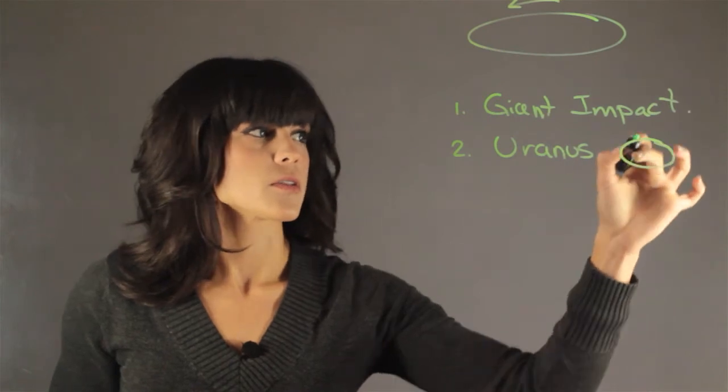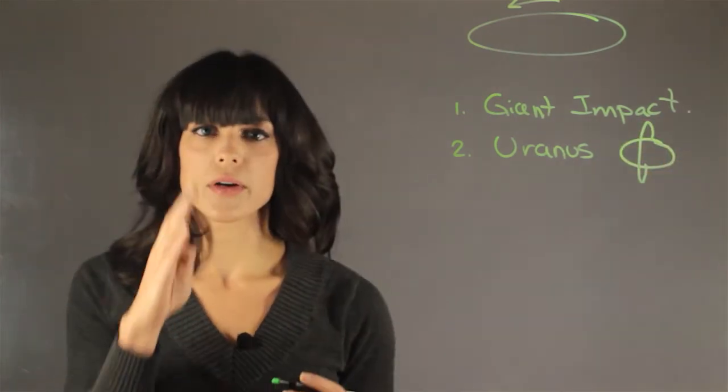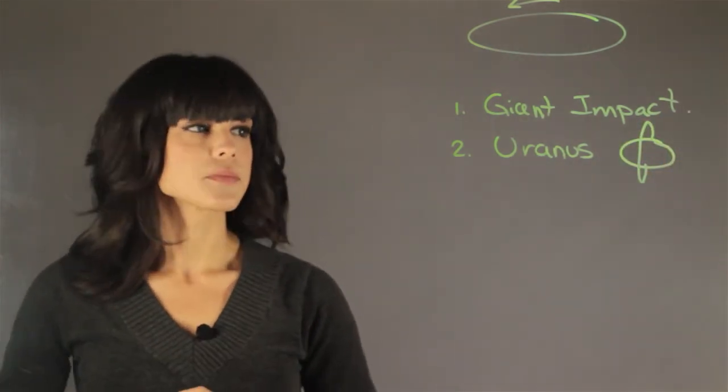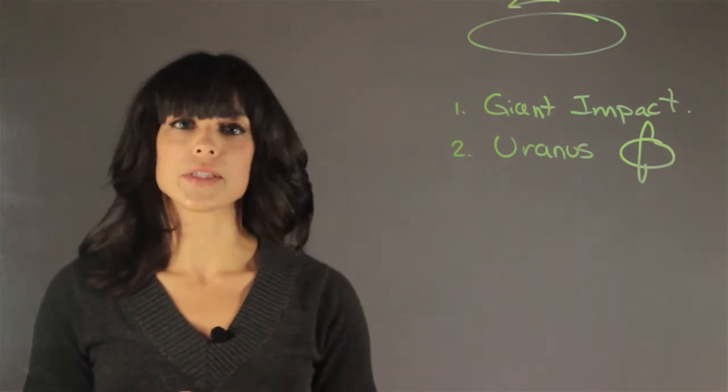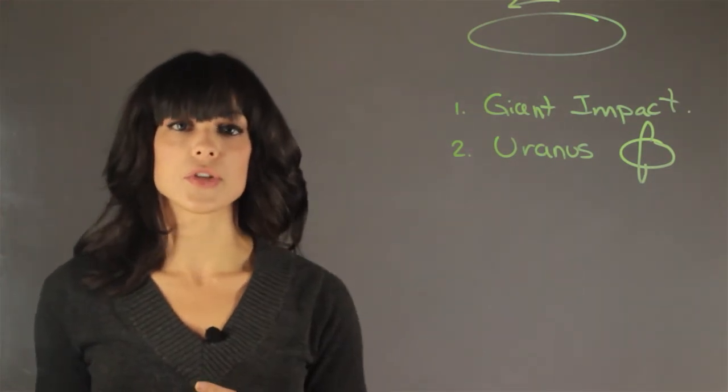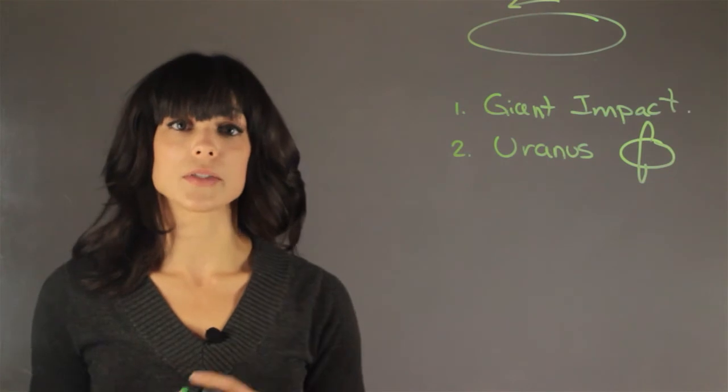So Uranus looks something like this, with the equator nearly vertical. And that had to do with several collisions that caused not just Uranus, but all of its moons to actually tilt as well.